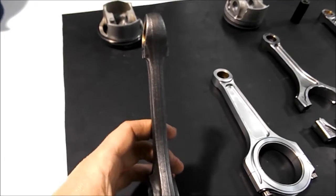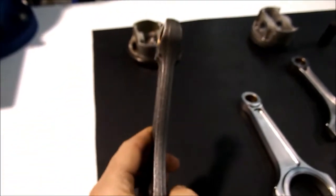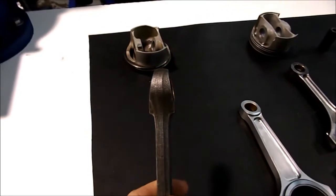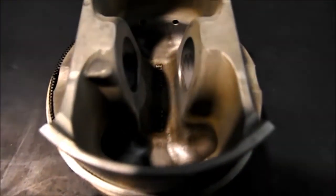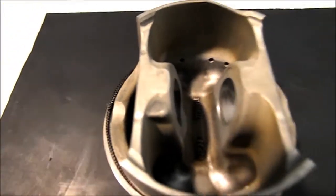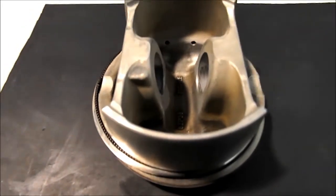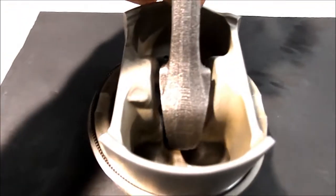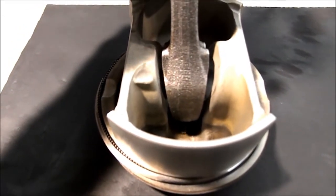Here is the OEM 5.0L Gallardo conrod. It's got a tapered small end, and that's simply to fit the same shape as the OEM 5.0L piston. You can see the piston pin or gudgeon pin bosses that are forged in are tapered. So the tapered small end is to fit the same shape as the piston.